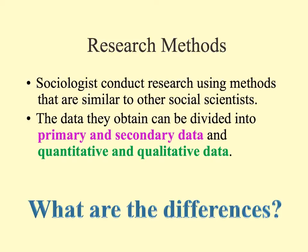Sociologists conduct research using methods very similar to other social scientists, such as political researchers and psychological researchers. The data that they collect can generally be divided into two different types: primary data and secondary data. Within those, you can have quantitative primary data or qualitative primary data, and likewise you can have quantitative secondary data or qualitative secondary data.